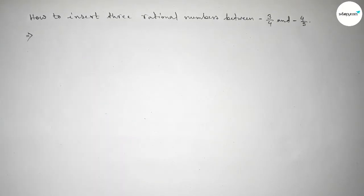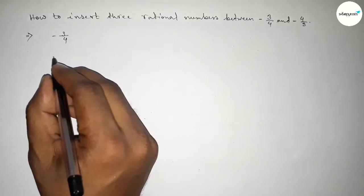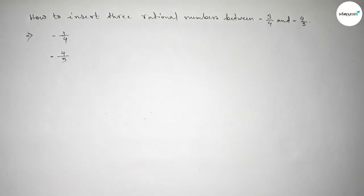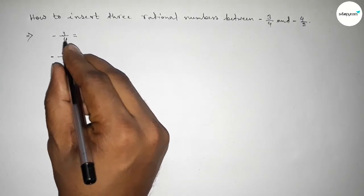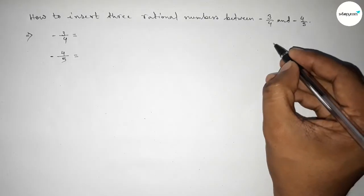First of all, marking here the implies sign. Now given the two numbers -3/4 and -4/5, the denominators of both numbers are not the same, so first we have to find out the LCM of the denominators of both numbers.